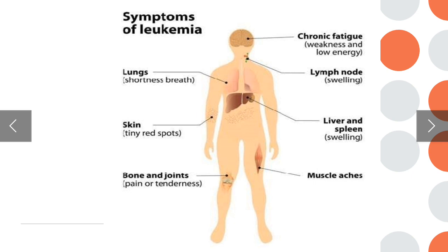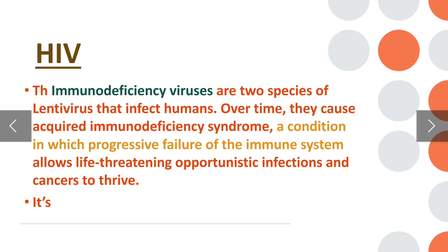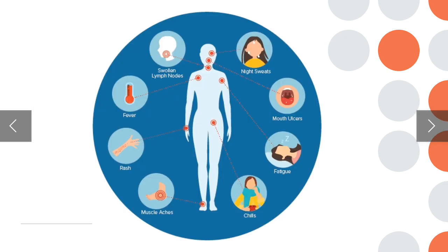Skin color changes and tiny red spots may appear, along with lung infections and shortness of breath. HIV — the human immunodeficiency viruses — are two species of lentivirus that infect humans. Over time they cause acquired immunodeficiency syndrome, a condition in which progressive failure of the immune system allows life-threatening opportunistic infections and causes cancer. Symptoms include night sweating, mouth ulcers, fatigue, chills, muscle aches, rashes, fever, and swollen lymph nodes.